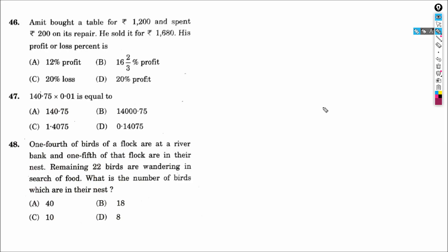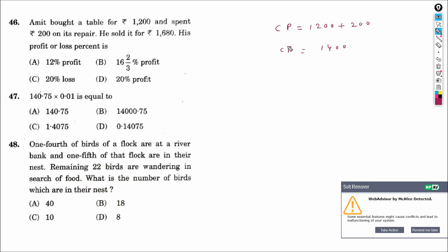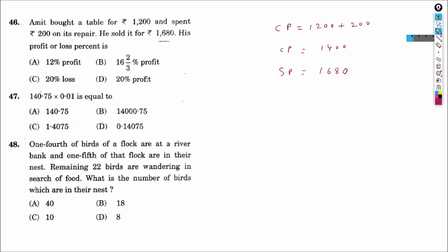Amit bought a table for ₹1200 and spent ₹200 on its repair. He sold it for ₹1680. Let us calculate profit or loss percentage. Cost price equals buying price plus repair charges: 1200 + 200 = ₹1400. Selling price is ₹1680. Since selling price is greater than cost price, there is a profit. Profit equals 1680 − 1400 = ₹280.